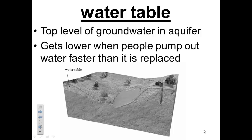The level of a water table changes during the year. It will rise when water is added by rain or melting snow, and it will become lower when there is a drought. Many people get their water from wells that go into an aquifer. The water table will become lower when people pump water out of the aquifer faster than it is replaced. If we do not use groundwater wisely, some aquifers may become dry.